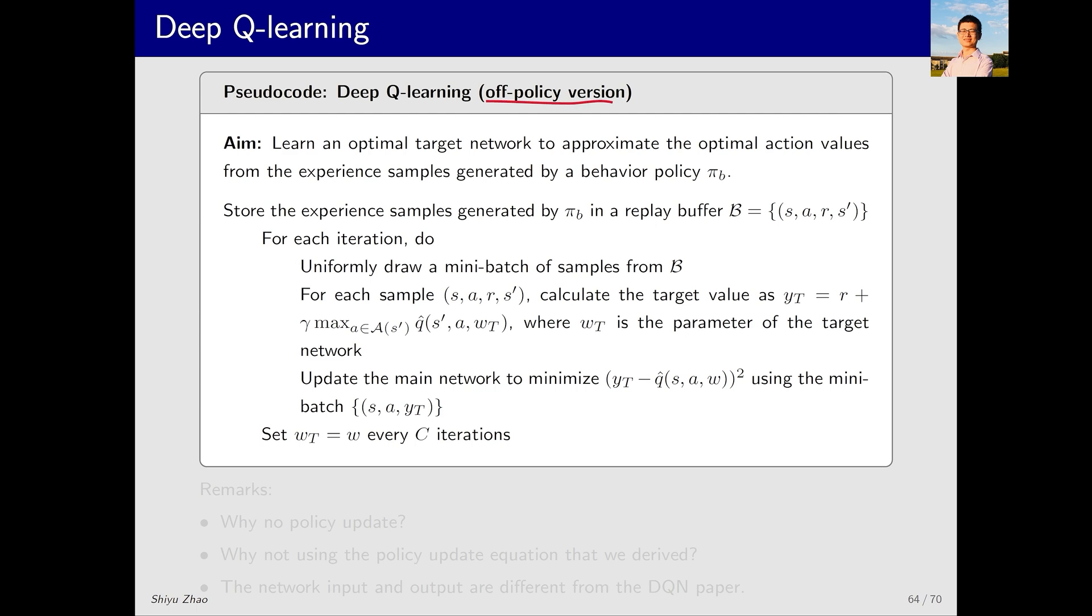Of course, deep Q-learning can also be implemented in an on-policy manner. Since this is off-policy, we assume we have a behavior policy Pi_B. This policy generates many samples which we store in a set known as the replay buffer.